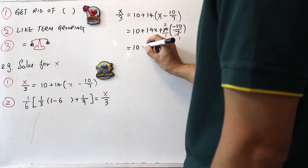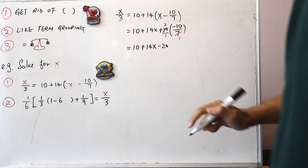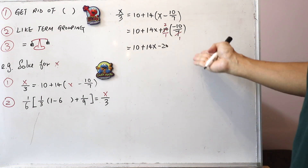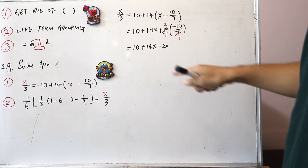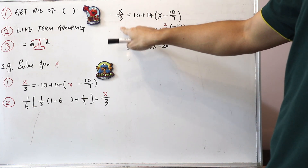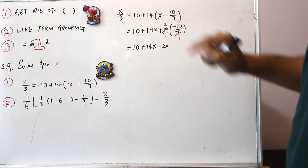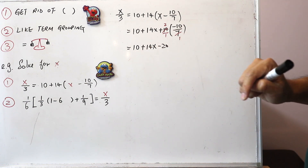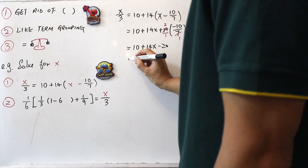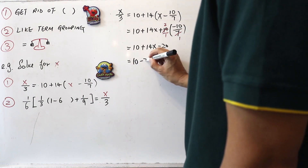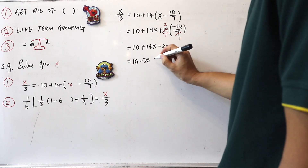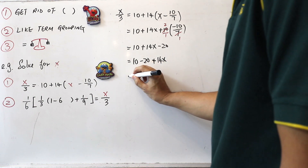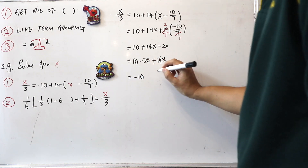So now we have 10 plus 14x minus 20. Looking at our three highlights: first highlight — do we have any more brackets? No, we don't. So we move on to highlight two: like term grouping. We have the unknown terms x over 3 and 14x, and the constants 10 and minus 20. We group the constants first: 10 minus 20 equals minus 10, and then we have the plus 14x.